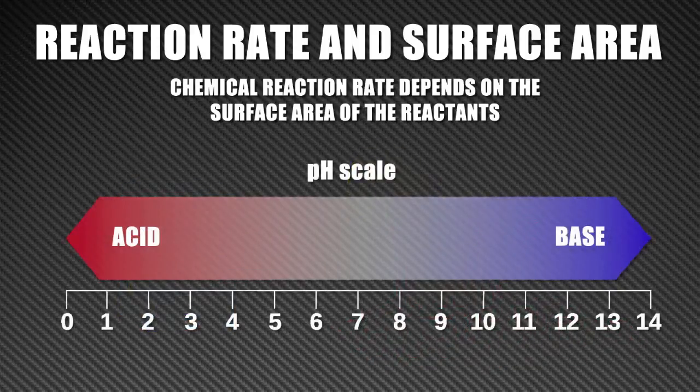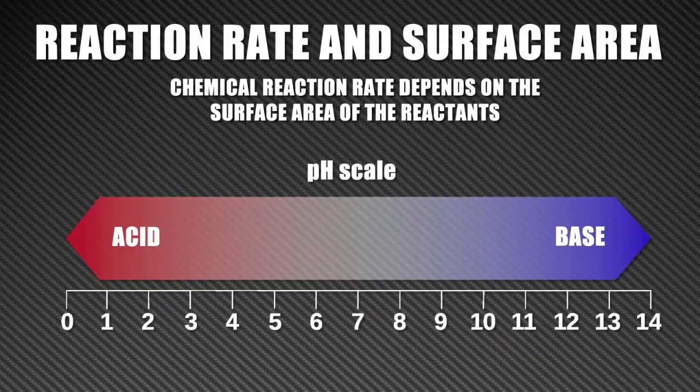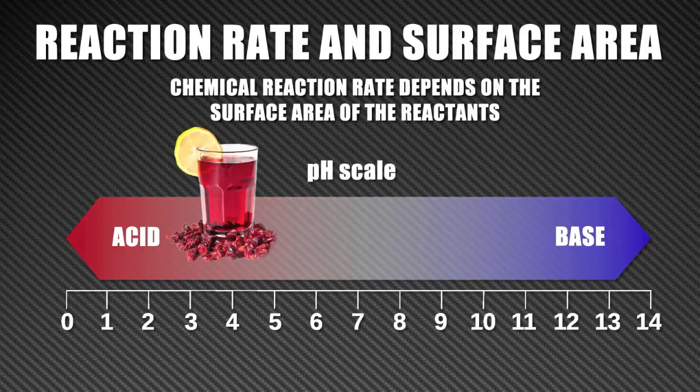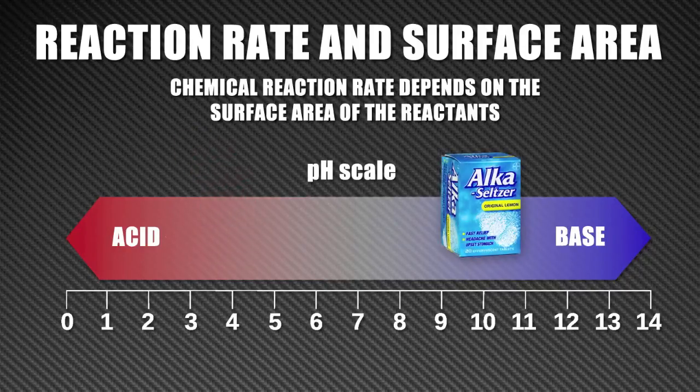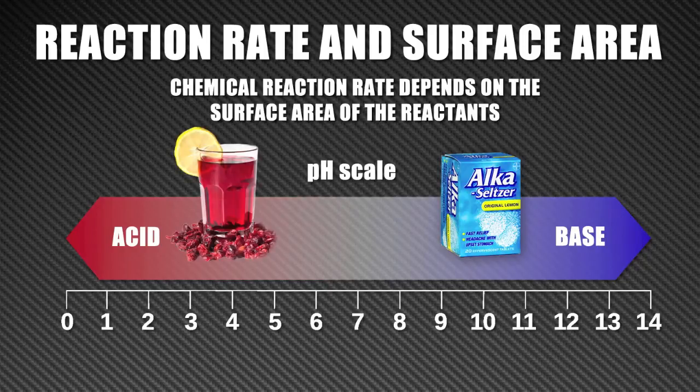You may already know about the pH scale. Acids are lower on the scale, bases are higher, and neutral is right in the middle. Cranberry juice is low on the pH scale, so when the basic Alka-Seltzer is added to it, the pH of the cranberry juice should move towards neutral.